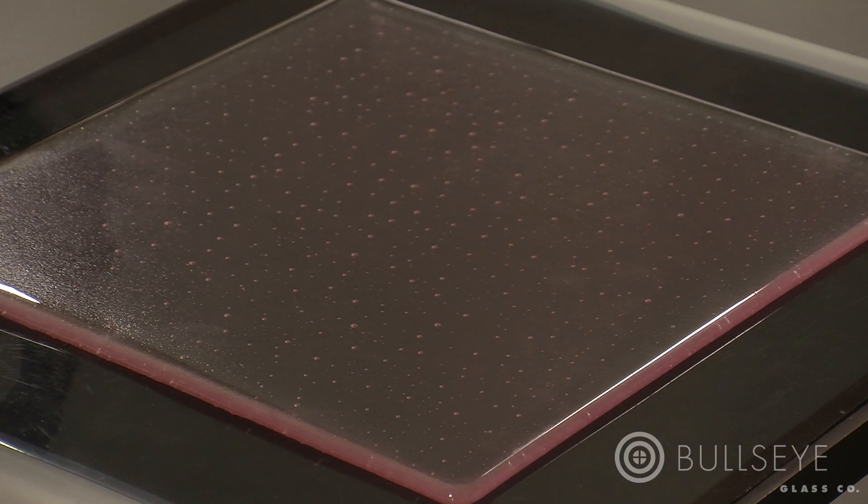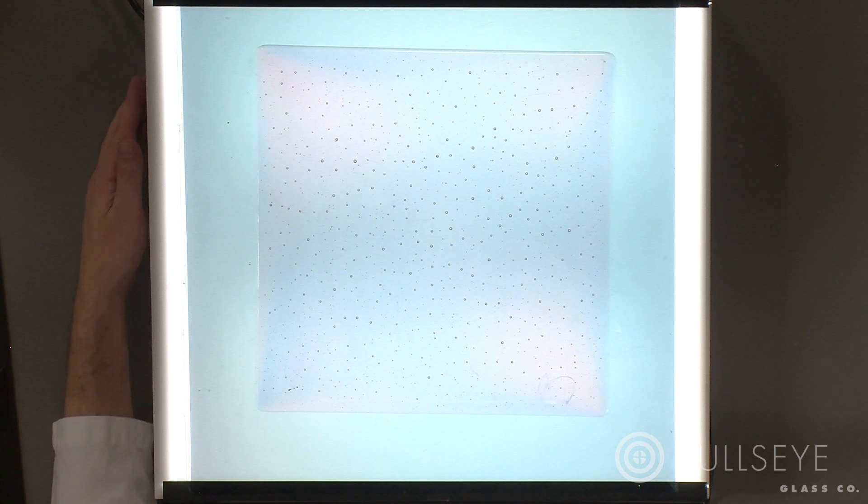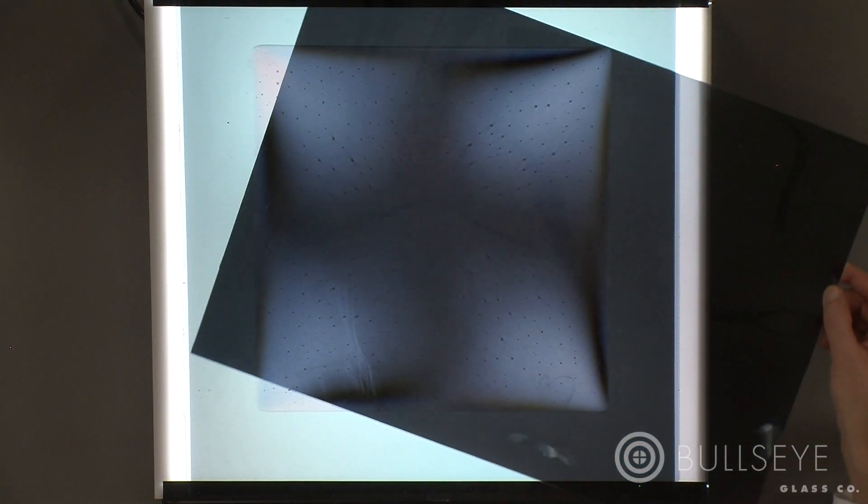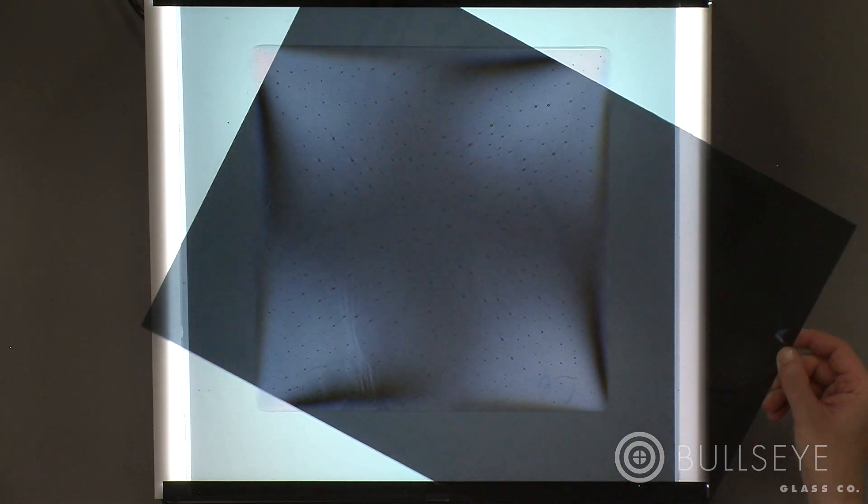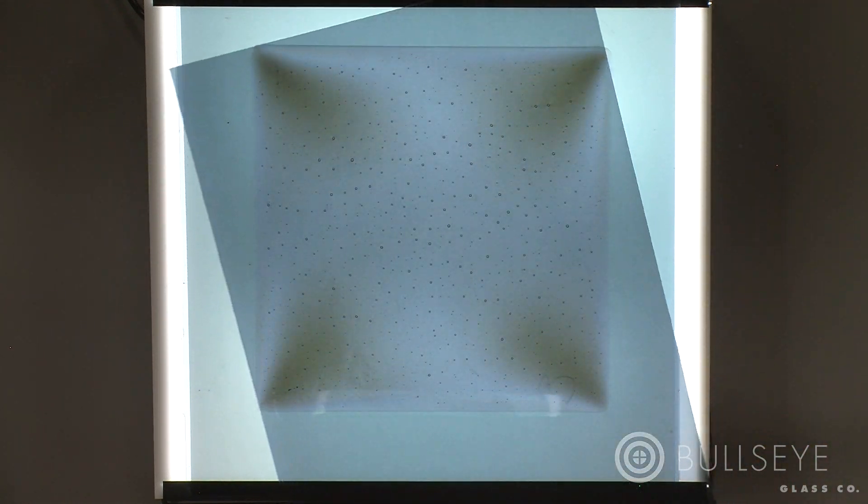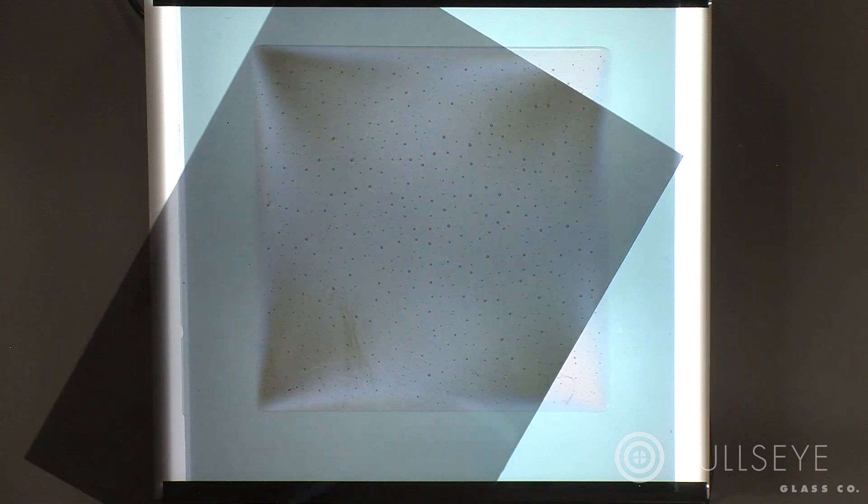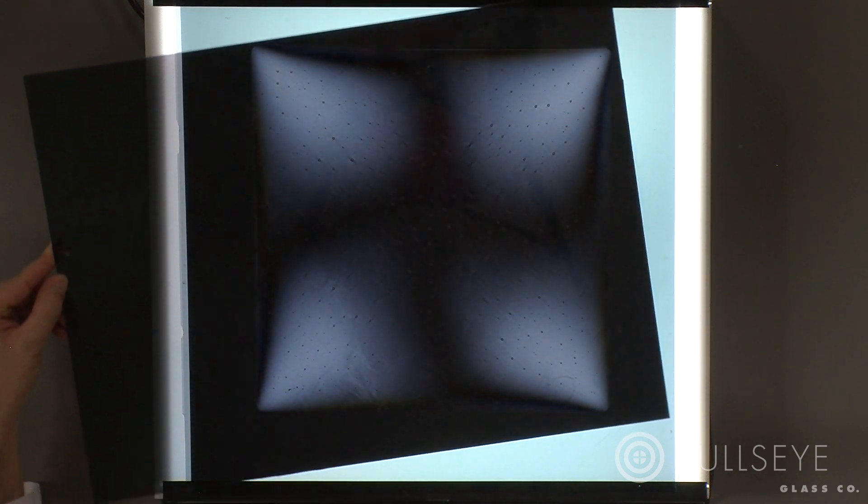A quick way to check for annealing strain is to view the piece under polarized light. When light passes through a transparent glass object, any strain will bend the light's path. This otherwise invisible shift is revealed when viewed through two polarized light filters.